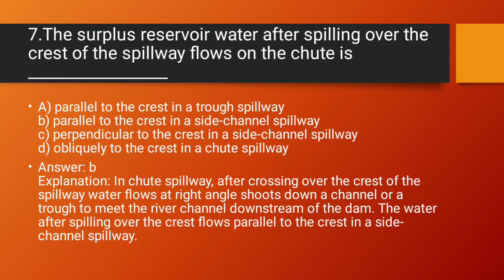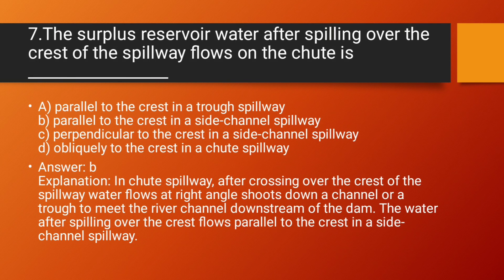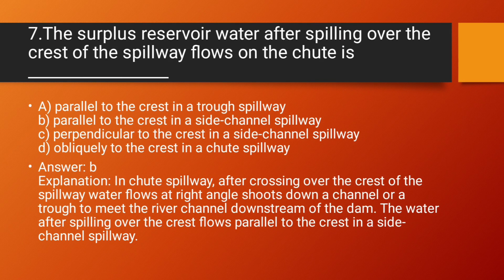Question number 7: The surplus reservoir water, after spilling over the crest of the spillway, flows on the chute — Option A: parallel to the crest in a trough spillway. Option B: parallel to the crest in a side channel spillway. Option C: perpendicular to the crest in a side channel spillway. Option D: obliquely to the crest in a chute spillway. Answer: Option B — parallel to the crest in a side channel spillway. In a chute spillway, after crossing over the crest, water flows at right angles down a channel or trough to meet the river channel downstream of the dam.